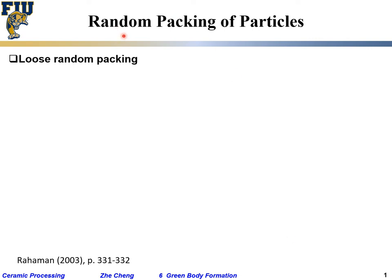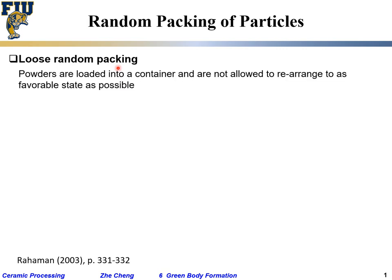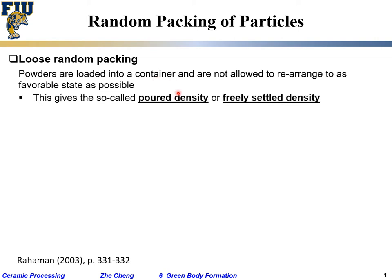That goes to the random packing of particles. For random packing of particles, there are so-called loose random packing. You just let the powder flow together and do nothing — get them into a container, and you do not give the time or put energy in to allow them to rearrange into a favorable state. You just pour them, and that's it. In this case, you get so-called free-settled density, packing density, relative packing density, or so-called pour density.